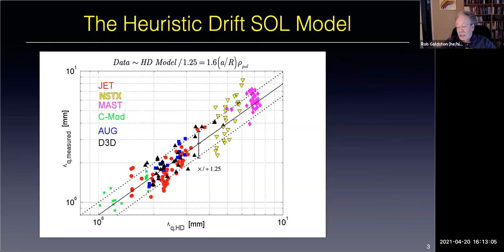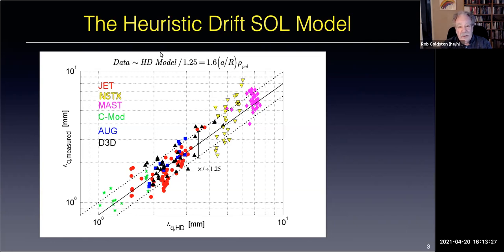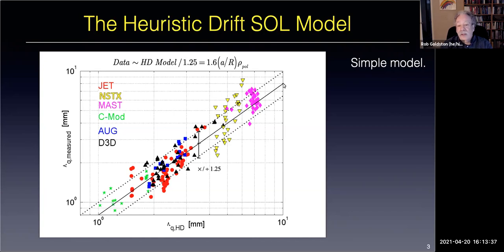Here is the result of that model. Taking that model gives you 2A/R times rho-poloidal. That's what you get from multiplying the average radial drift times the C-sound. 1.6 A/R times rho-poloidal fits the data better. The data are about 25% lower than the model prediction—not worth having an emotional fit over 25%. It's an extremely simple model, not a bad fit, within 25% over an order of magnitude range.